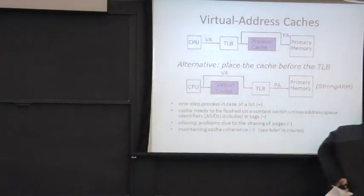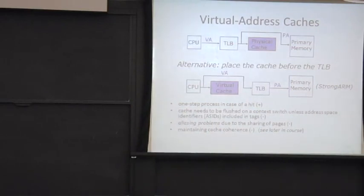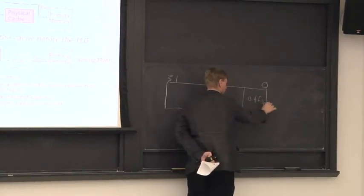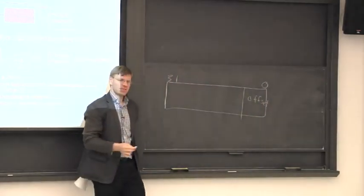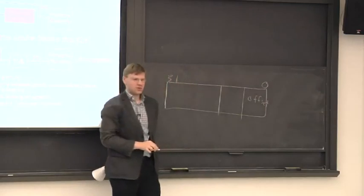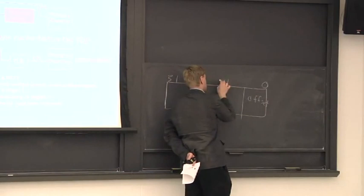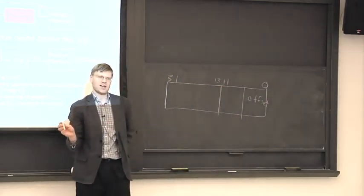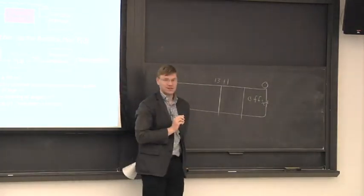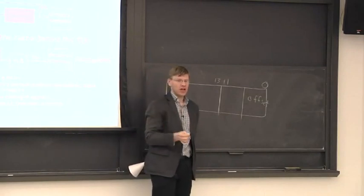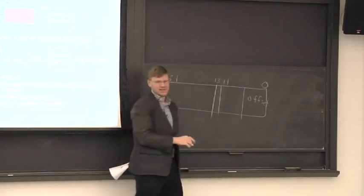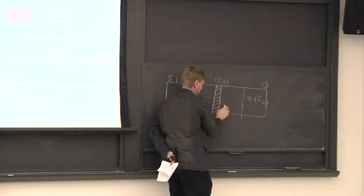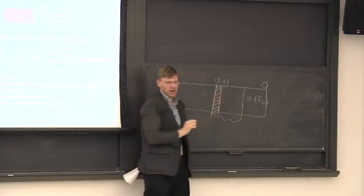For example: we have a 32-bit address, a page size of 4 kilobytes — that's 12 bits — and a direct-mapped cache of 8 kilobytes. Our index into our cache has one bit above the page boundary.